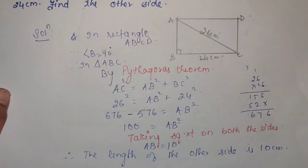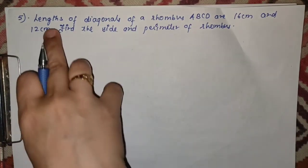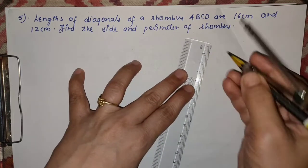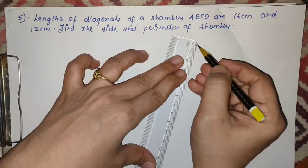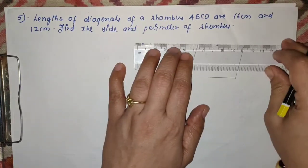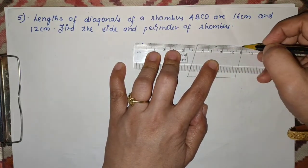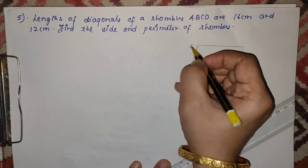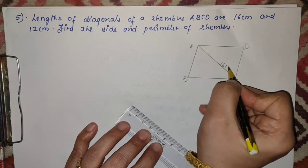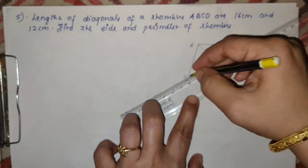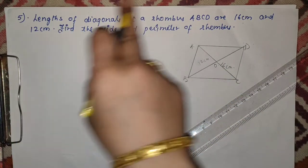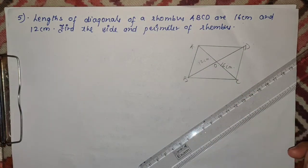Now let us move to the next sum. Length of a diagonal of a rhombus — immediately draw a rhombus rough diagram. कभी भी rough diagram draw करोगे — बहुत अच्छा होता है — picture clear हो जाता है कि what is given and what is not given. So ABCD — diagonals: AC = 16 cm and BD = 12 cm, intersecting at O.